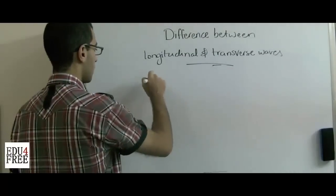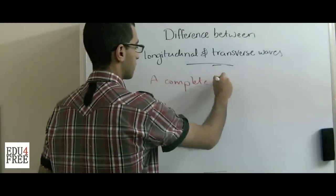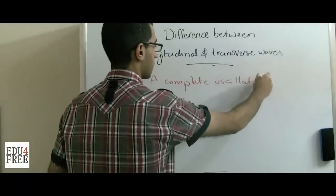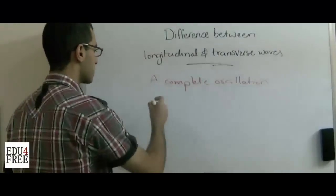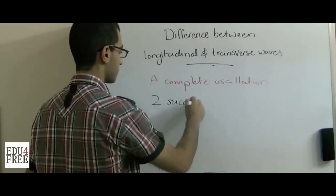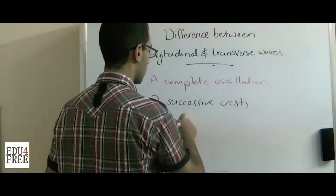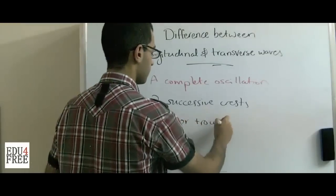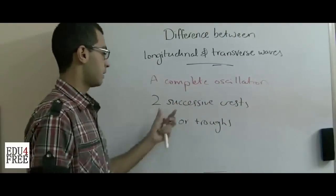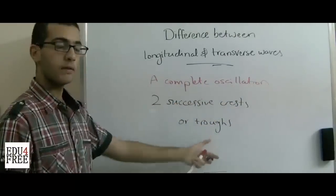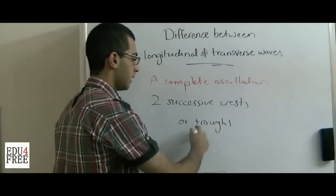A complete oscillation is the distance between two successive crests or troughs. The complete oscillation is represented by the distance between two successive crests or troughs, or the distance of a crest and a trough.